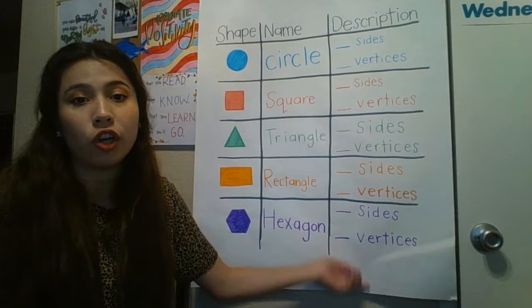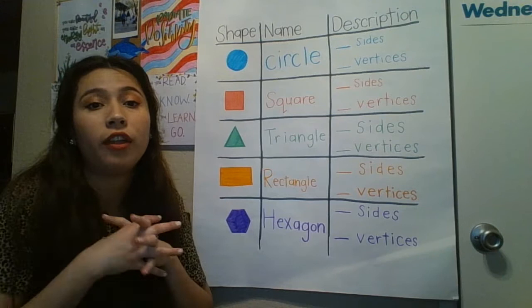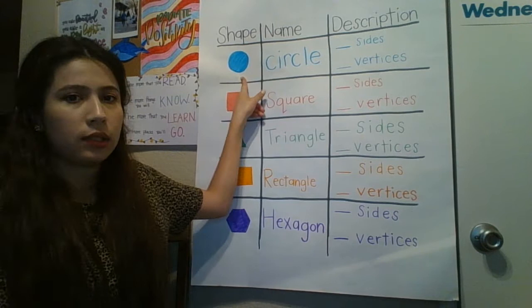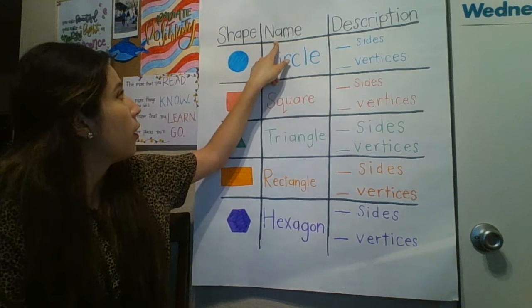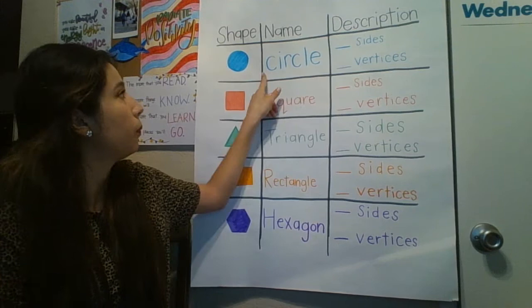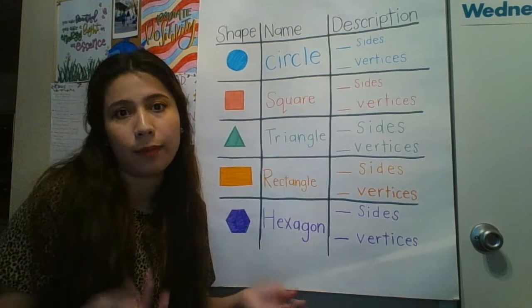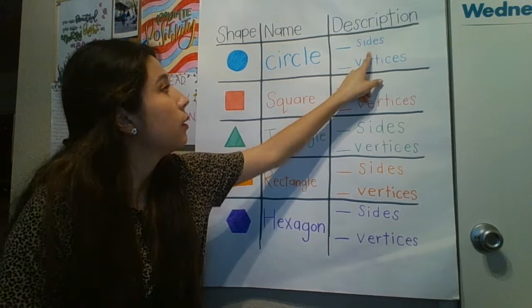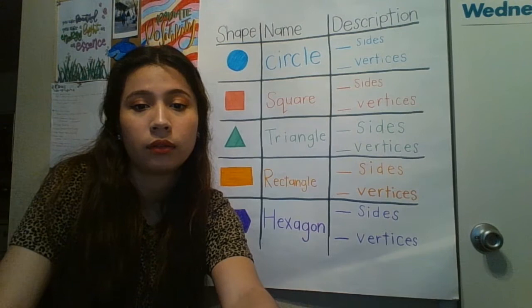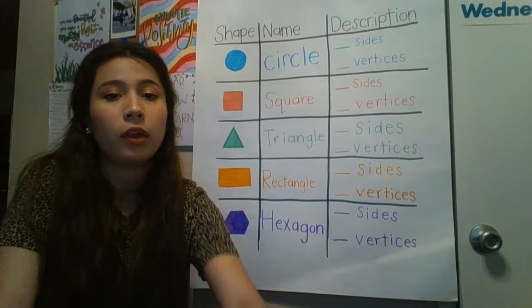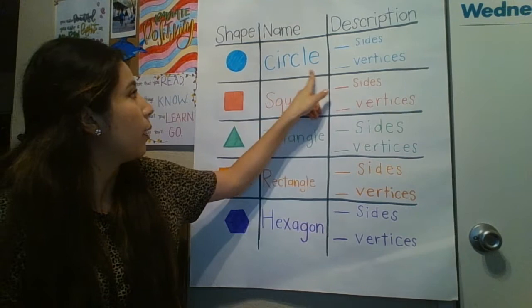Now here I have a chart that I made. We're going to fill it in with all the things that we know about shapes. The first shape I see here is a circle. This is the shape, and here is the name — it says 'circle.' Over here it says description, and we're going to describe the shape. There's a blank line for sides and a blank line for vertices. The first one is a blue circle, and we need to figure out the sides and vertices.